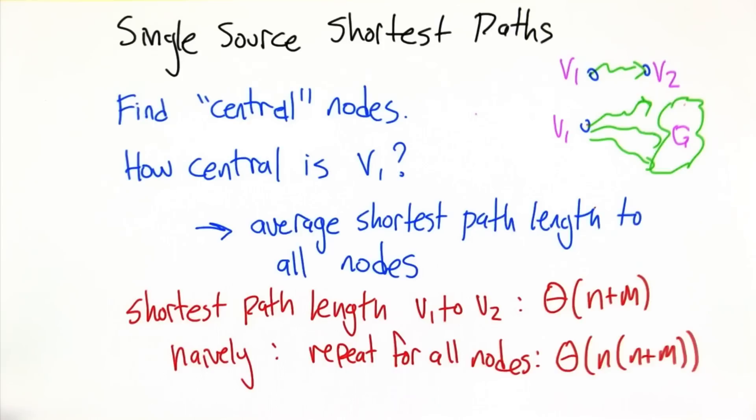The running time for that approach is going to be big theta of N, the number of nodes, times the time that it takes to do shortest path search. So it's really N times N plus M, which is N squared plus NM.